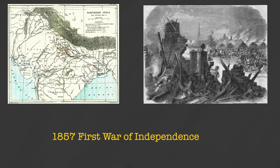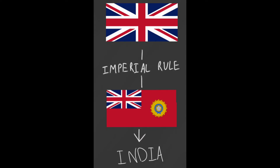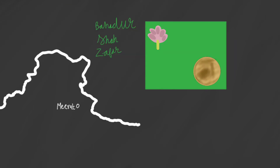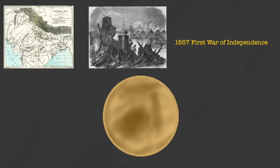This flag was introduced in the decades following the 1857 First War of Independence to represent Britain's imperial role in India. In fact, the first flags of a united India were used in that war — for example, many of the protesters in Meerut, where the uprising started, adopted a flag designed by Bahadur Shah Zafar with a green background, a lotus, and a chapati. There's a link to an article about the connection between chapatis and the uprising in the description.